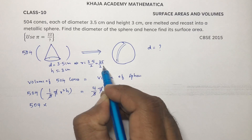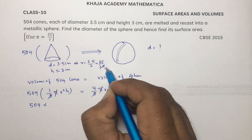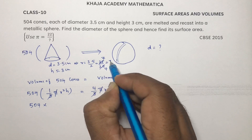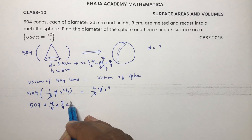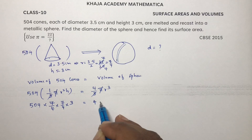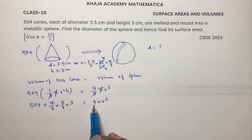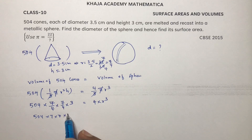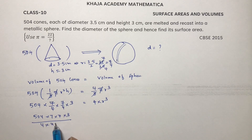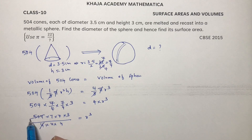Simplifying 35/20 by cancelling — 5 times 4, 5 times 7 — so the radius of the cone is 7/4. So we have 504 times (7/4) times (7/4) times height 3, equals 4 times r³. Expanding: 504 × 7 × 7 × 7 × 3 divided by 4 × 4 × 4 equals r³.